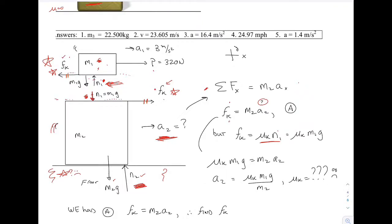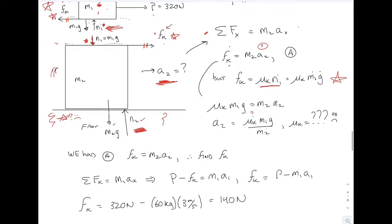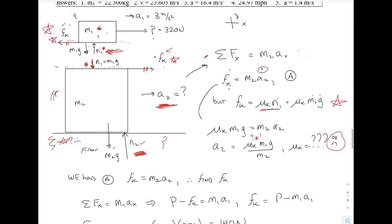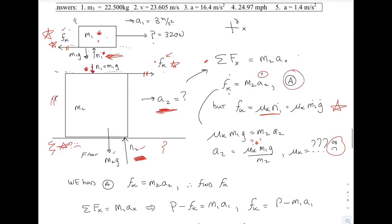N1 from the top picture is just M1*G. You could solve this for mu_k, but the problem is they don't give you the number for mu_k, so that approach doesn't work. What you have to do is go back to equation A.